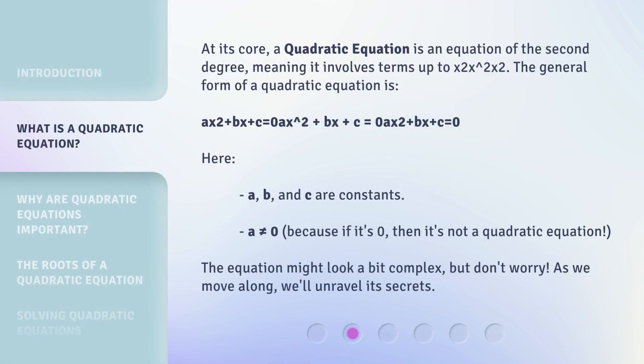At its core, a quadratic equation is an equation of the second degree, meaning it involves terms up to x squared. The general form of a quadratic equation is ax² + bx + c = 0. Here, a, b, and c are constants.